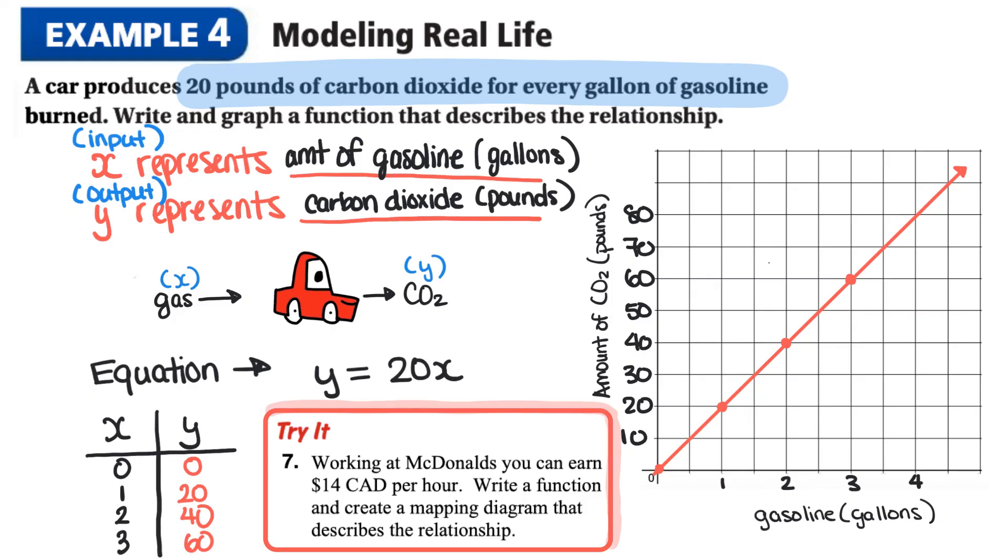So here is your last try question for this video. We're going to look at this word problem. It says working at McDonald's you can earn 14 Canadian dollars per hour, write a function, and create a mapping diagram that describes this relationship. So instead of doing a graph we're going to do a mapping diagram.